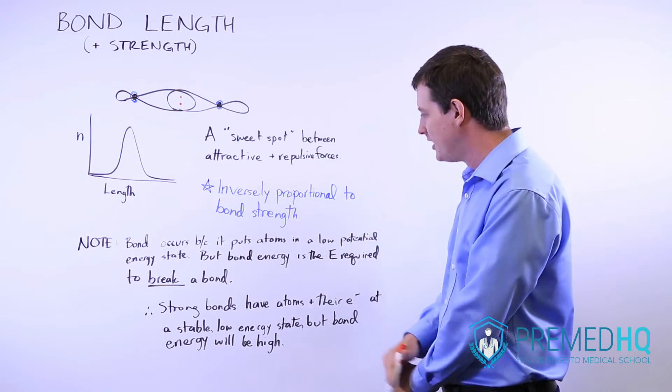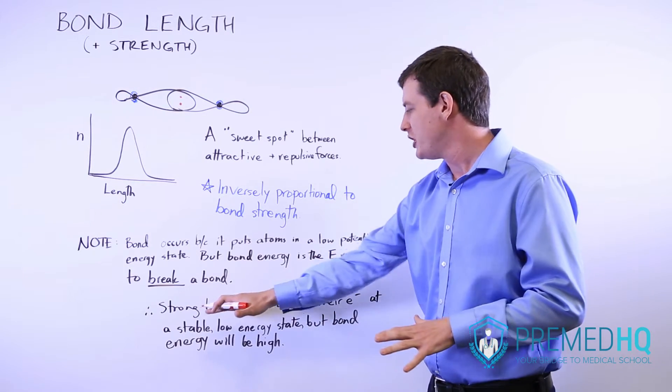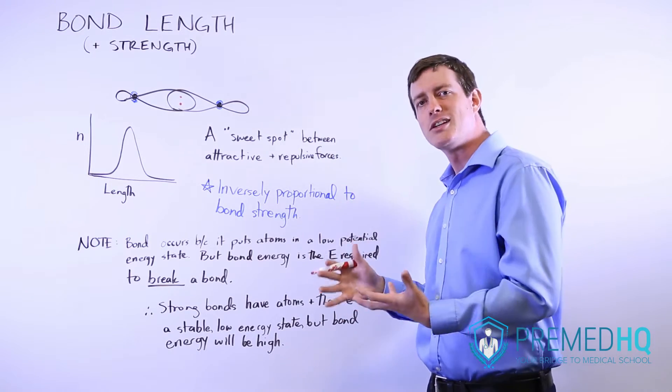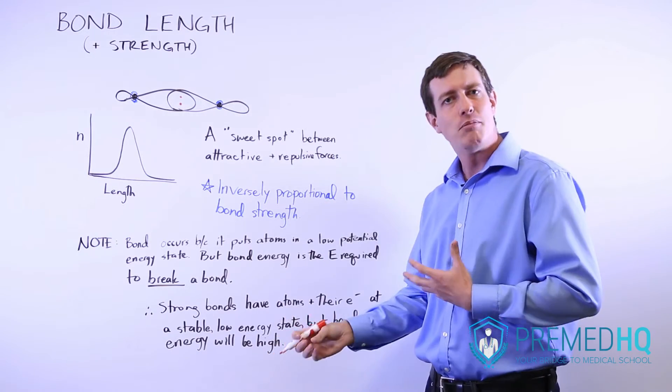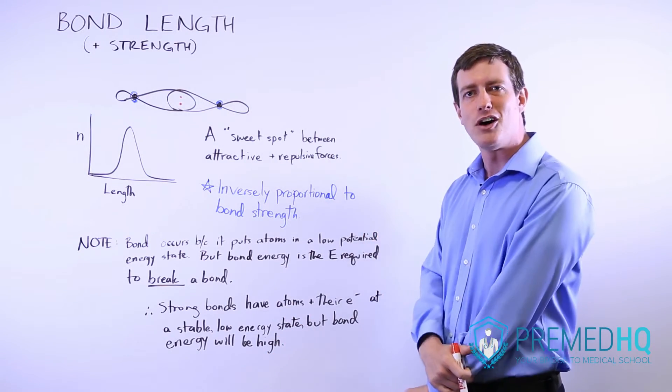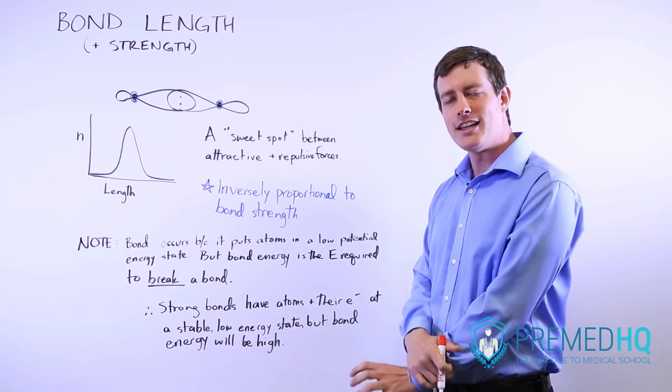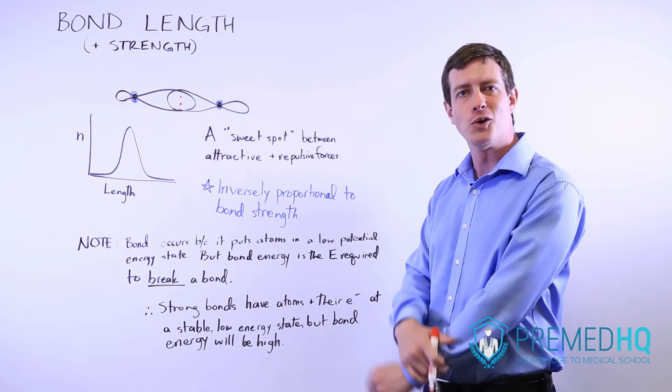Be aware of that distinction. Low potential energy when you have a strong bond—that's why strong bonds are formed, because they lower the potential energy of the electrons and protons and nuclei involved. But the bond energy is very high, and that's because it takes a lot of energy in order to break that.